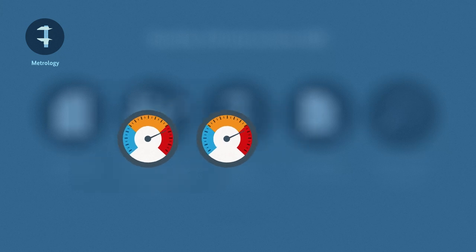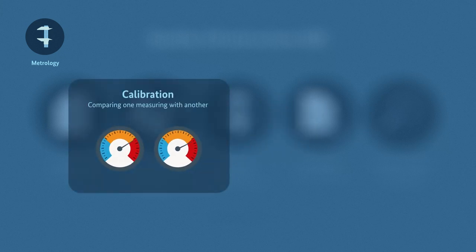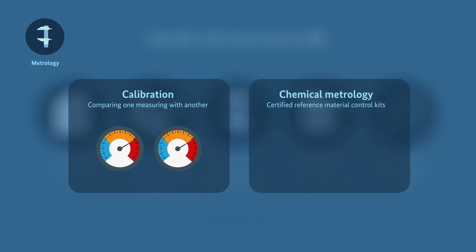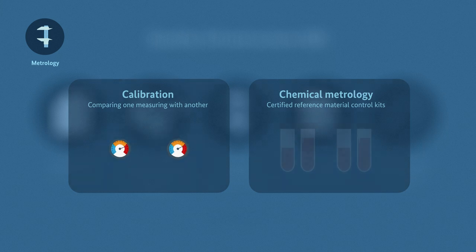Calibration means checking whether a measuring device measures correctly by comparing it to another device which has been proven to perform accurate measurements. In medical diagnosis, chemical metrology is even more important than calibration. For example, certified reference material is needed to compare Jen's blood values with. For the sake of simplicity, we will nevertheless stick to calibration in the following.